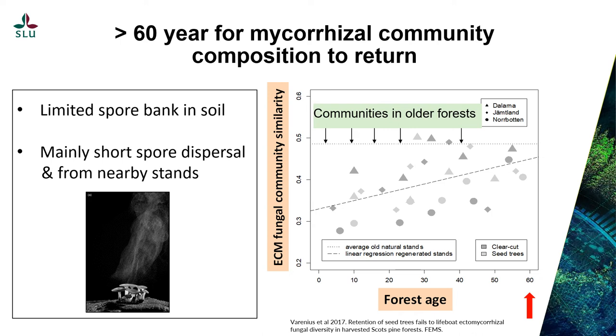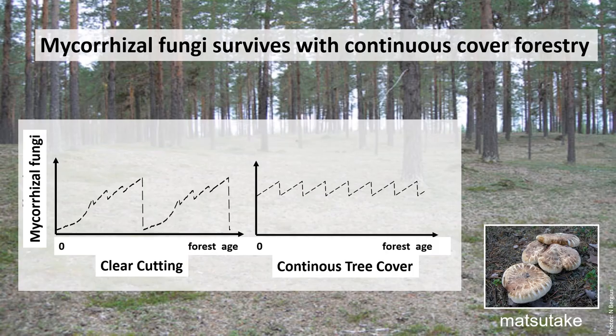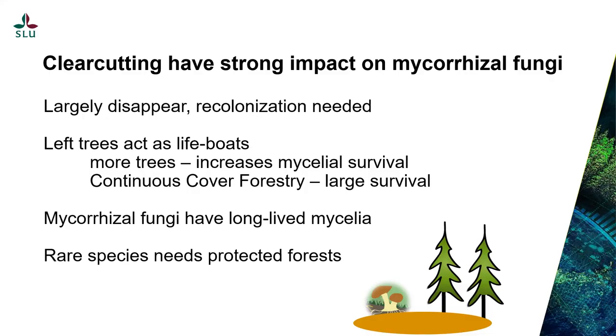Therefore, rare species have — besides changing environmental conditions — severe difficulties becoming re-established after clear cutting. There is a major difference between clear-cutting management and continuous cover forestry regarding impact on the mycorrhizal community. Under clear cutting, the community drops to very low levels after each cutting operation and has to recolonize. In contrast, continuous cover forestry keeps the community at a high level continuously due to the persistent presence of trees, allowing mycelia to continue to live, so the impact is much, much smaller.